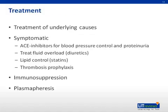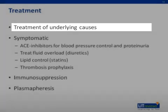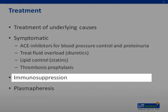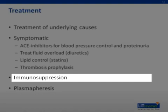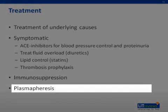If possible, the first step of therapy is the treatment of the underlying causes. Meanwhile, symptomatic treatment is important to minimize complications. Immunologic disorders are treated with immunosuppressive drugs like corticosteroids or cyclophosphamide. Rapidly progressive glomerulonephritis may improve with plasmapheresis.